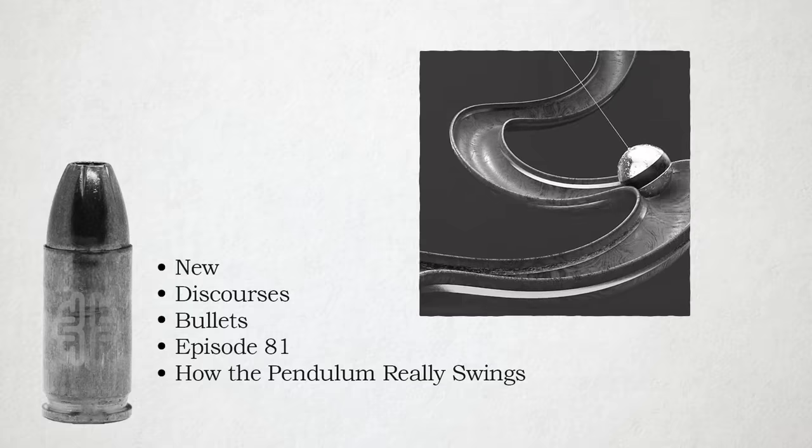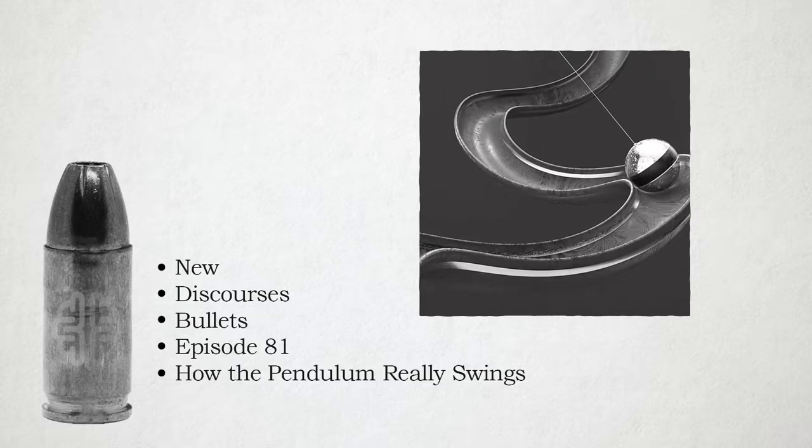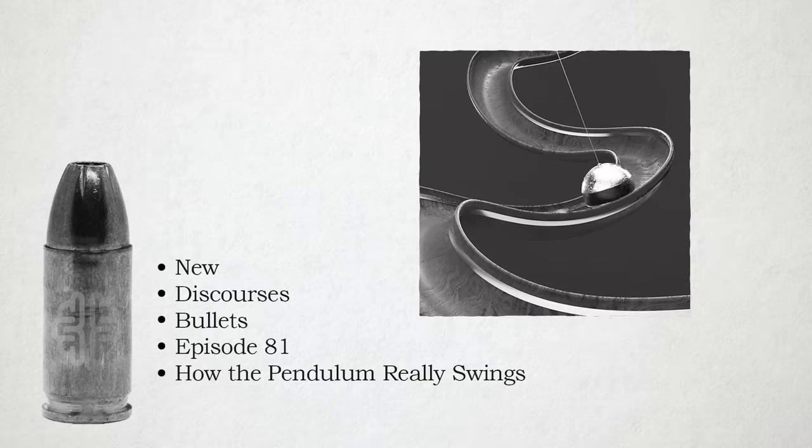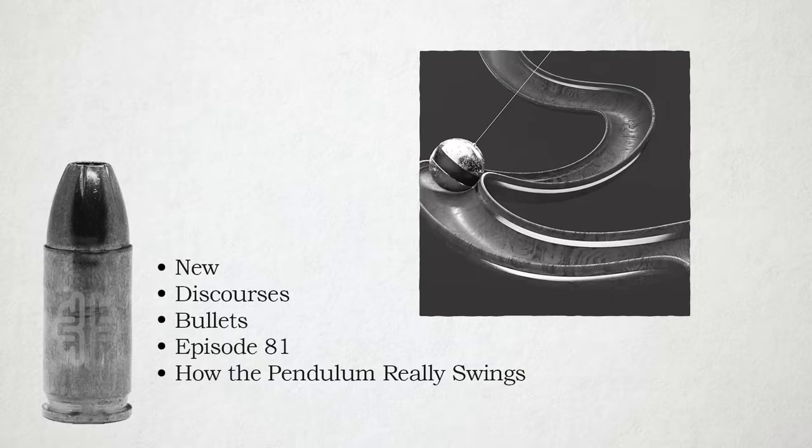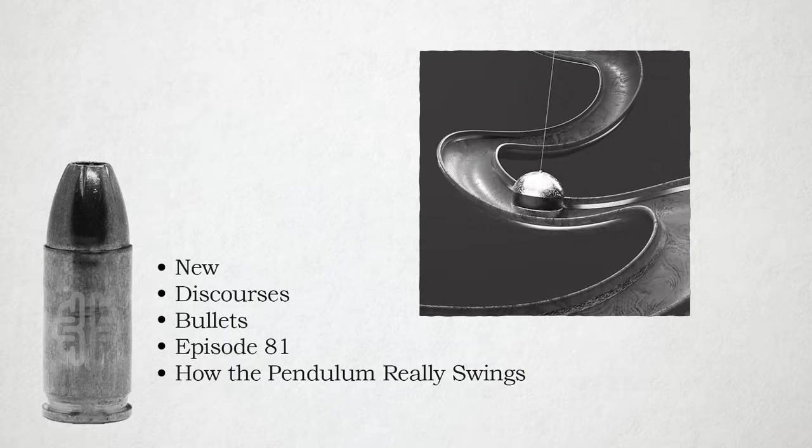And so the critical thing to keep in mind is that this, when we talk about the pendulum swinging, this is how it swings. It doesn't swing in a one dimensional straight back and forth line. It swings in a two dimensional S shaped curve back and forth while moving forward to their agenda the whole time.